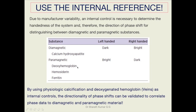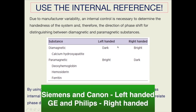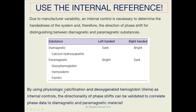Paramagnetic substances like deoxyhemoglobin, ferritin, and hemosiderin appear bright on left-handed scanners and dark on right-handed scanners. Siemens and Canon systems are generally left-handed. GE and Philips scanners generally use right-handed systems.